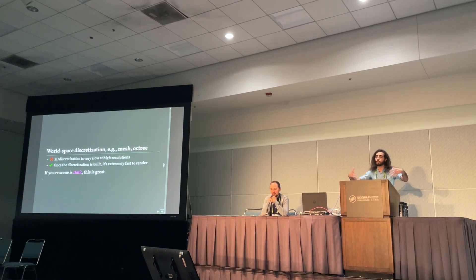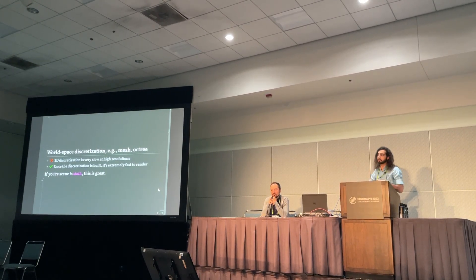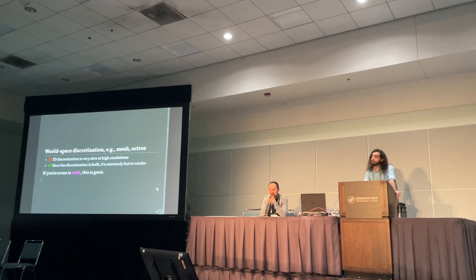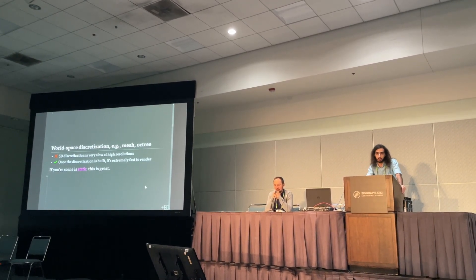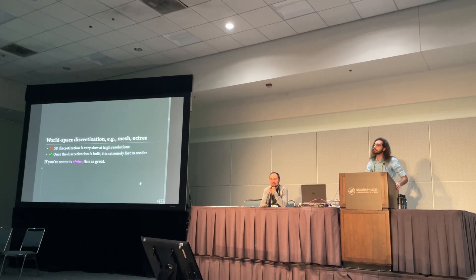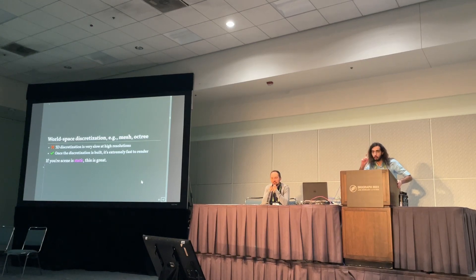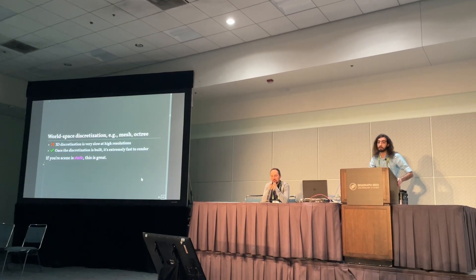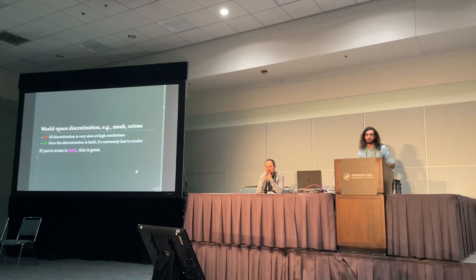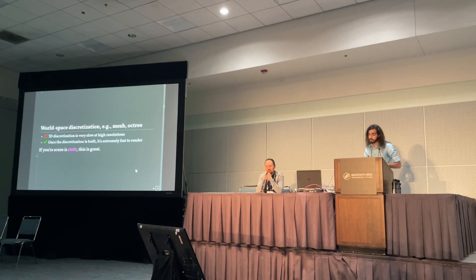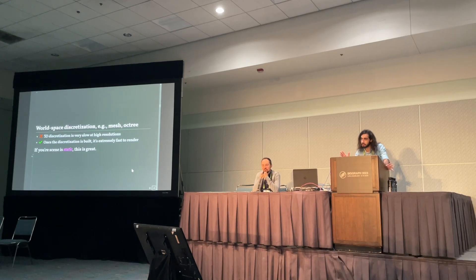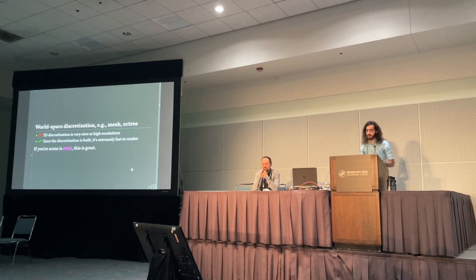So the alternative is to do some sort of world space discretization. This might be running Marching Cubes to get a mesh, or building an ASDF or some sort of lock tree. And this is, in general, extremely slow — it's usually cubic in the resolution because we're in 3D. But once your discretization is built, it's extremely fast to render — you just rasterize some triangles or do some tree traversal. And so, if your scene is static, this is fantastic: you just build this thing once and then you're good to go.